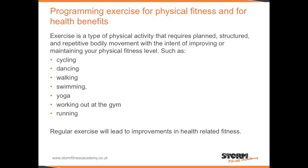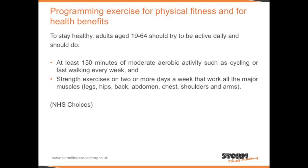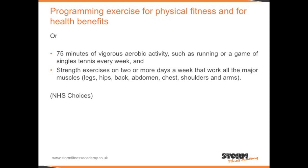Regular exercise will lead to improvements in health-related fitness. To stay healthy, adults aged 19 to 64 should try to be active daily and should do at least 150 minutes of moderate aerobic activity such as cycling or fast walking every week, and strength exercises on two or more days a week that work all the major muscles: legs, hips, back, abdomen, chest, shoulders and arms. Alternatively, 75 minutes of vigorous aerobic activity such as running or a game of singles tennis every week.